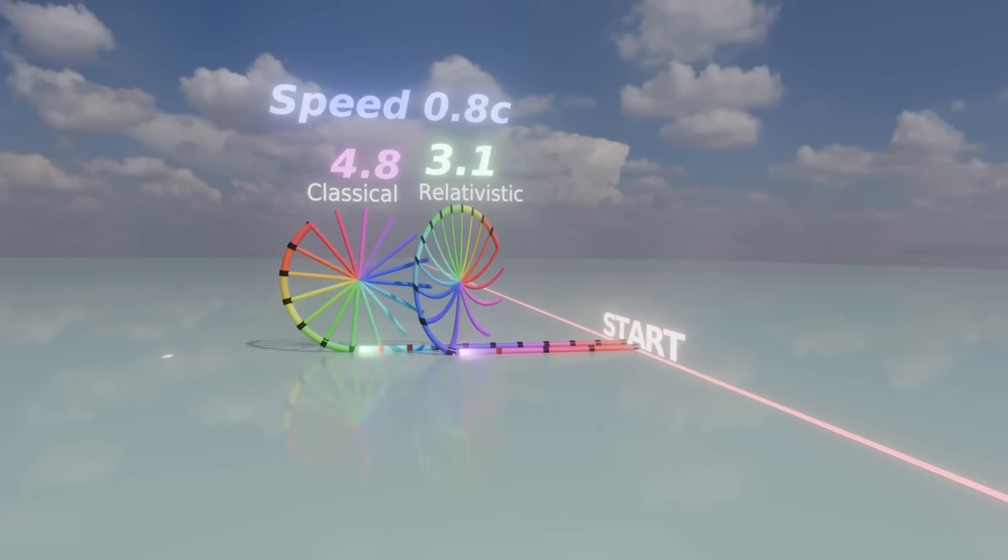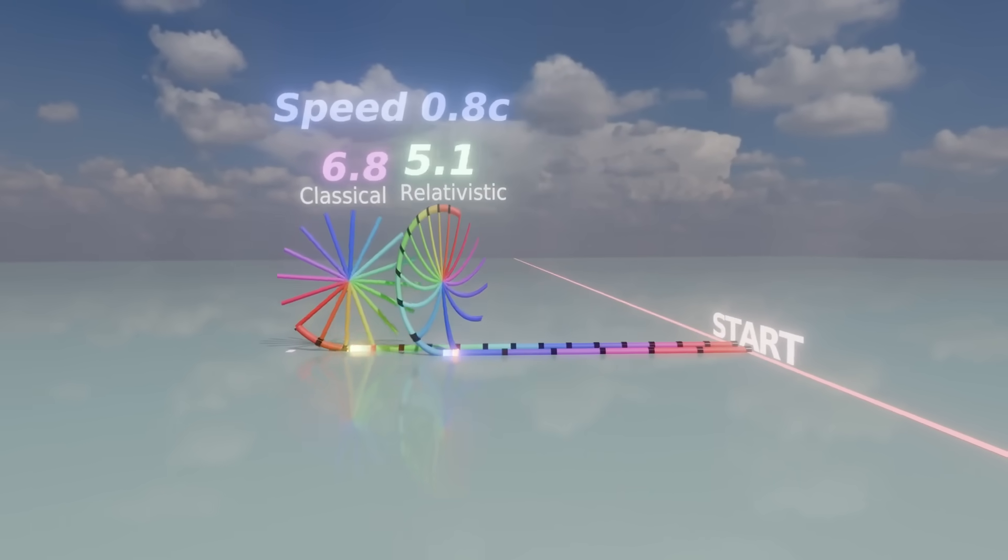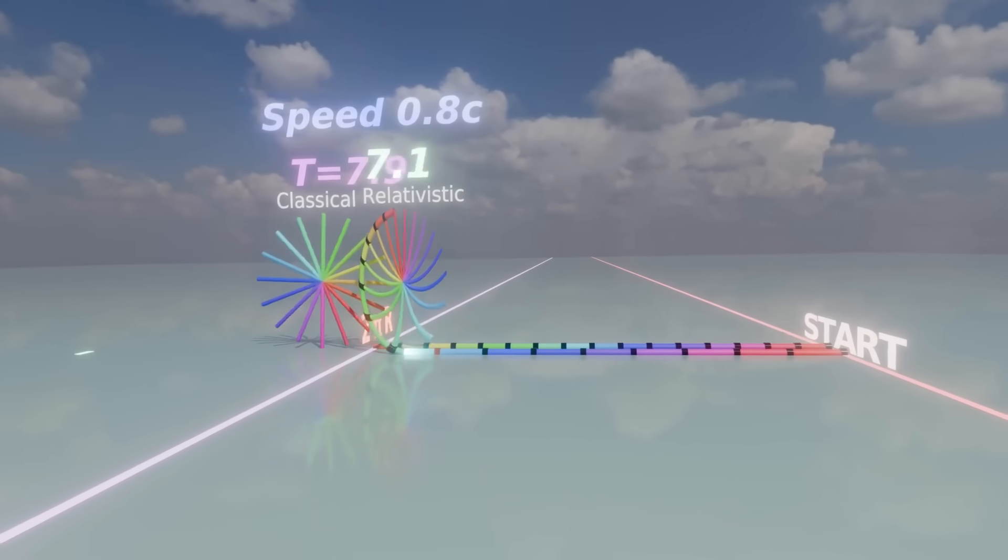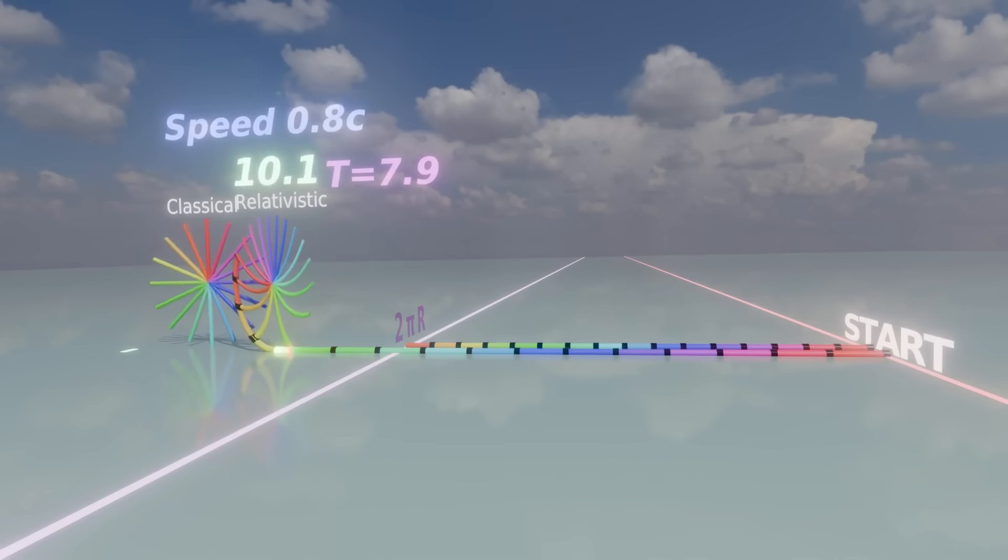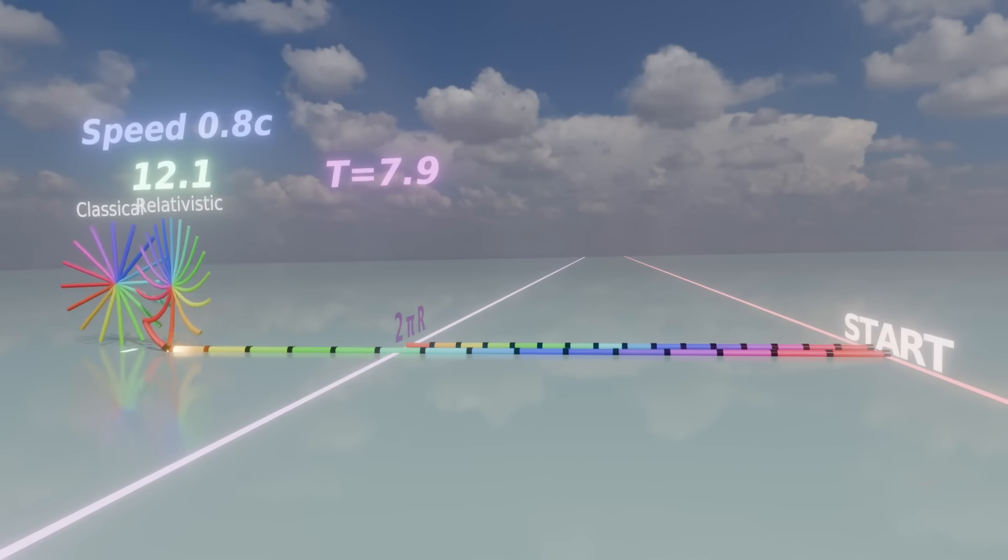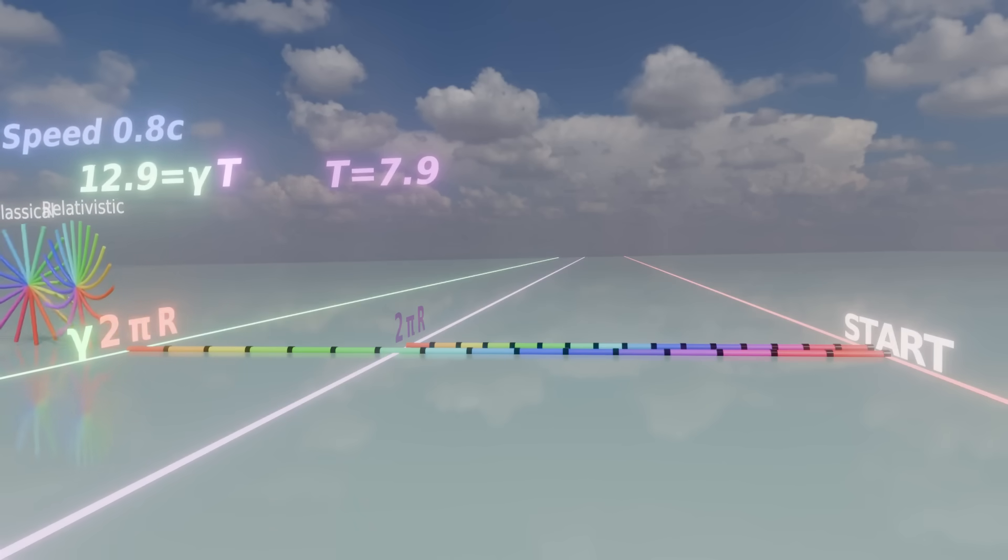That longer distance is equal to the unwound line. This demonstrates that the circumference of a rotating circle is gamma times 2π times the radius.